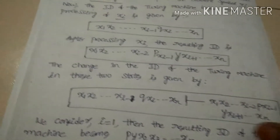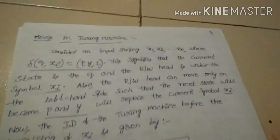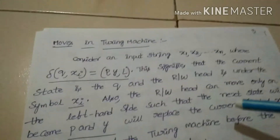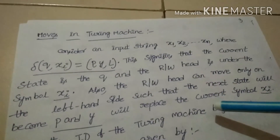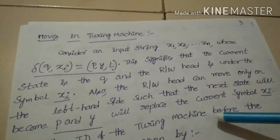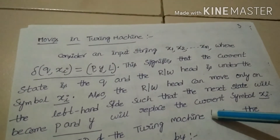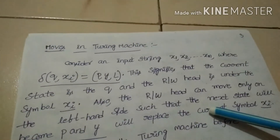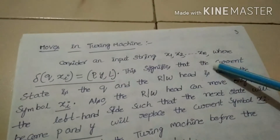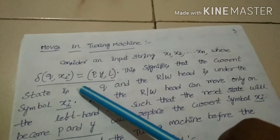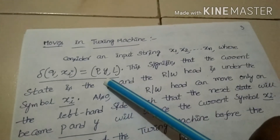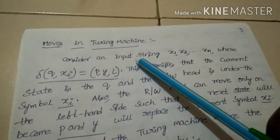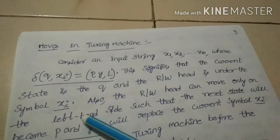The next topic is moves in a Turing machine. Similar to pushdown automata, δ(Q, X) can induce changes in the ID of the Turing machine. Consider an input string X1, X2, ..., Xn. Where δ(Q, Xi) = (P, Y, L). This signifies that the current state is Q and the read-write head is under the symbol Xi. The read-write head can move only to the left-hand side such that the next state will become P and Y will replace the current symbol Xi.